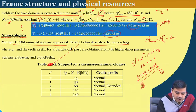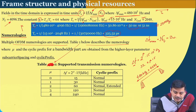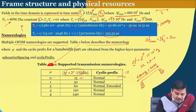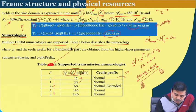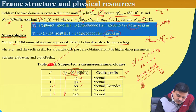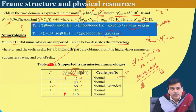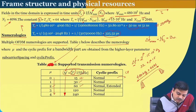As you keep increasing the value of mu — using the factor 2^mu × 15 kHz — when mu = 1 it is 30 kilohertz, when mu = 2 it is 60 kilohertz. So the subcarrier spacing increases with increasing mu. This is in contrast to the 4th generation system. Since it is also OFDM, the only thing that changes is the subcarrier spacing, and this change is controlled by the parameter mu.